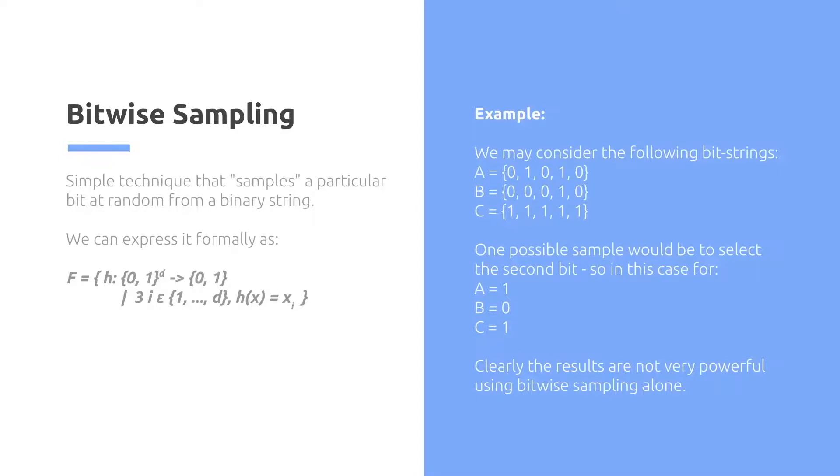Bitwise sampling is a very simple technique that just simply samples a particular bit at random from a binary string. Let's consider the example of ABC. We have three binary strings here. We may consider just randomly the second bit. So in this case for A, we have 0 and 1, so 1 is the second bit. For B, we have 0 and 0, so that would be the 0 bit. And C, we have 1 and 1, so again we have 1. So A equals 1, B equals 0, C equals 1.